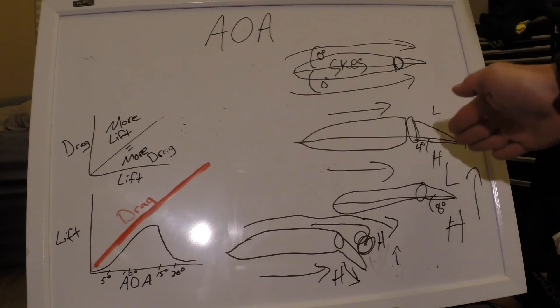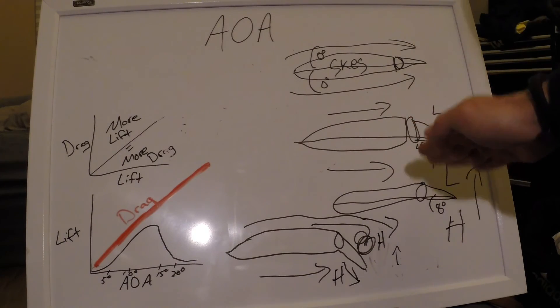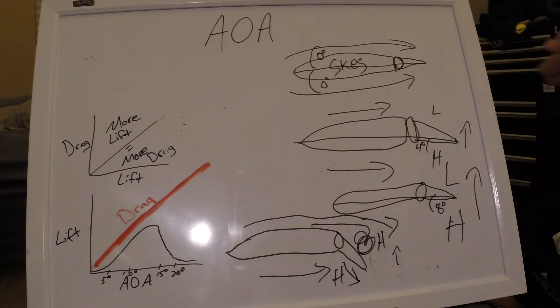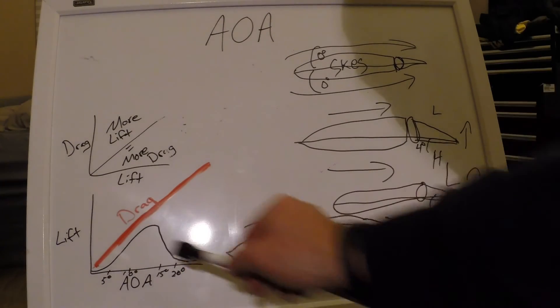Now you tilt it a little bit more, you get to eight degrees or so, and now you feel your hand being lifted up more and a little bit more drag being pushed back. So we have our increased lift and our increased drag. More lift equals more drag.